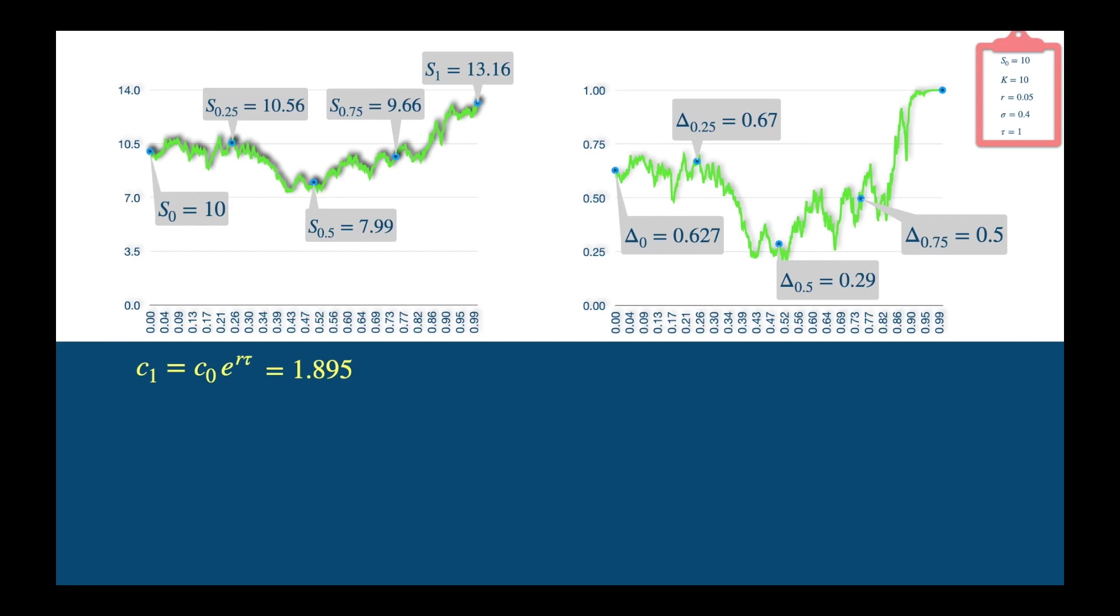We see the initial delta is 0.627, so to replicate the option, we should hold these many units of the stock, assuming they sell fractions of stocks. We are luckily in the electronic age, where you can buy anything, so not an unrealistic assumption I suppose, otherwise multiply everything by 1000.